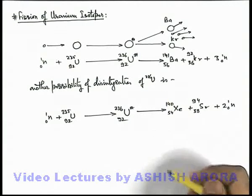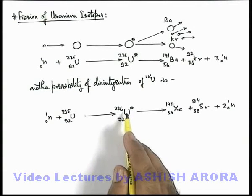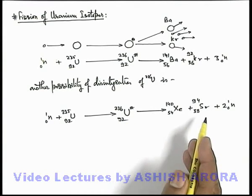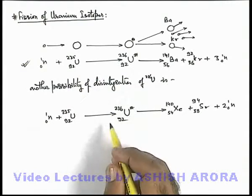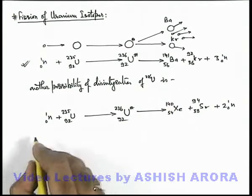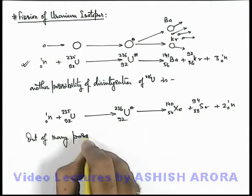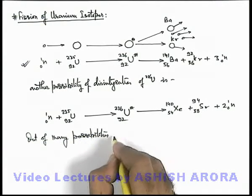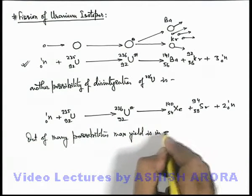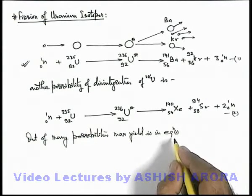Similar to these two, there are many more possibilities of disintegration of excited uranium. All these occur because the disintegration is a random phenomenon, but the maximum possibility will be of this reaction because the energy release in this case is maximum, so probability is more. Out of many possibilities, maximum yield of products is in equation 1.